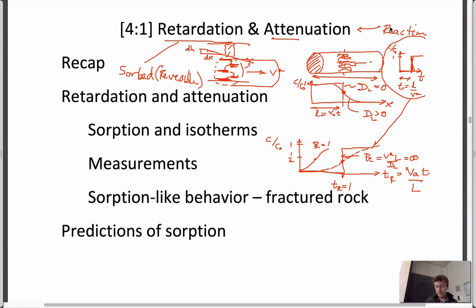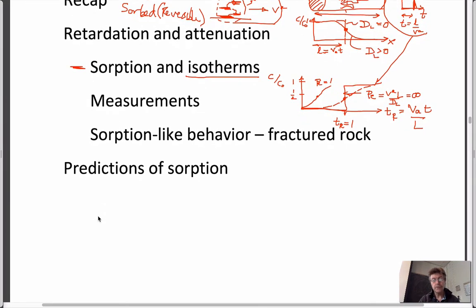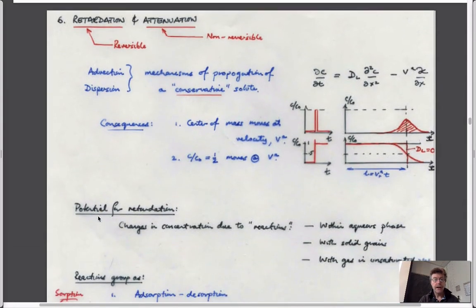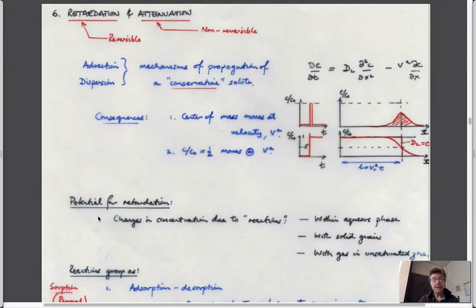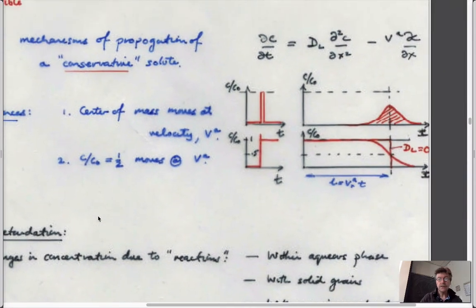To understand that, we need to know a little bit about sorption and isotherms. Isotherms are just ways of describing the magnitude of sorption, how we might measure it, and how we might represent that behavior in fractured rock. We need everything we've done so far to be able to take this next step. These are the two cases we've just talked about: the conservative case is described by this advection-diffusion equation.